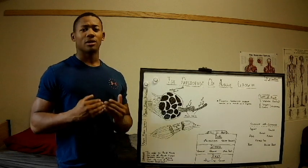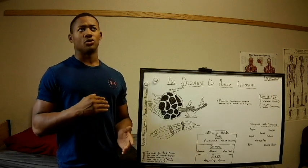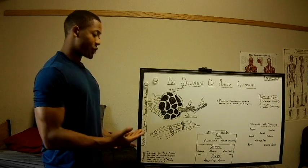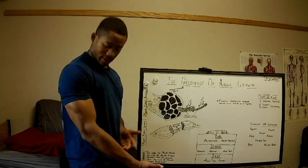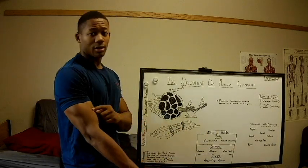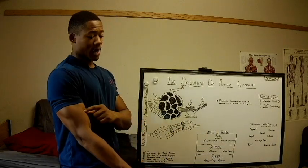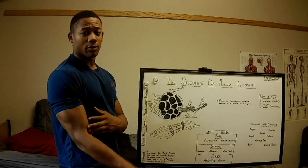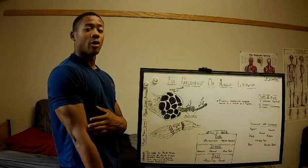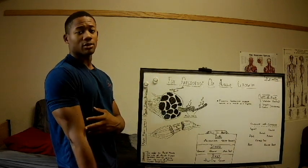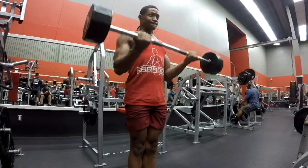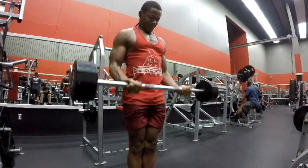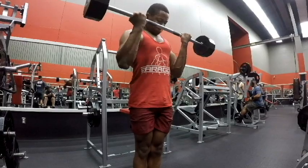Tendons primarily serve to cause movement when the muscle contracts. For example, when the bicep contracts, it pulls on the tendons and the rest of the arm, causing elbow flexion and extension. Skeletal muscles are primarily tasked with support and movement.